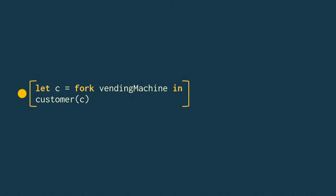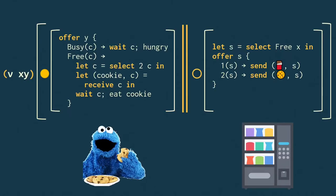So let's have a look at how we can run this program. The fork construct spawns a thread which runs the vending machine function and returns a channel endpoint used to communicate with the vending machine. Now, this big yellow blob means that this is the main thread of the program.